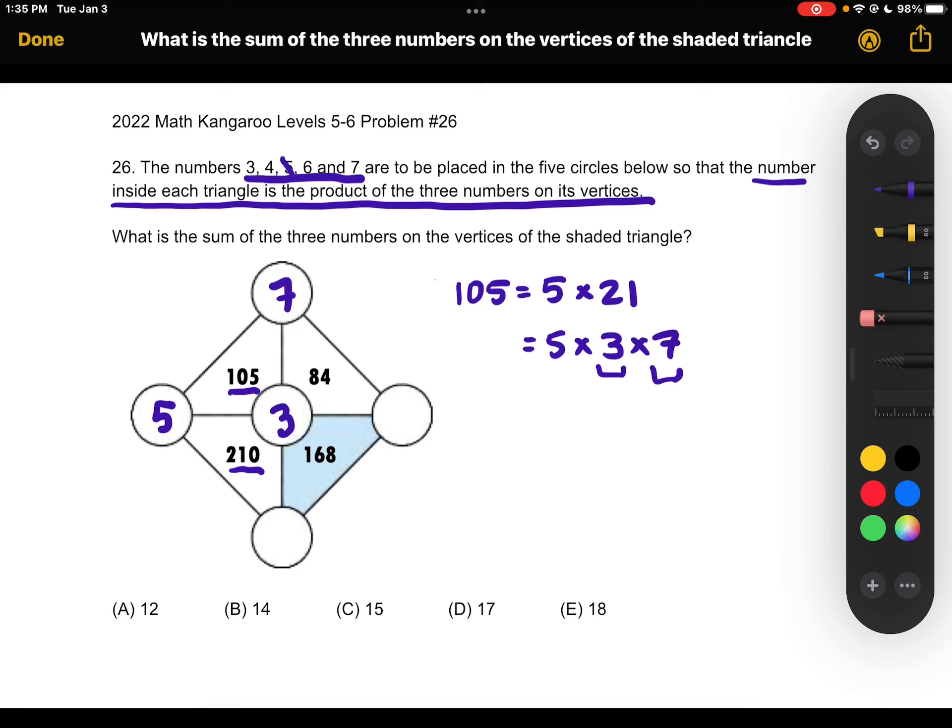That means that the placement of the 3 and 7 must be switched, with 7 in the middle and 3 at the top. And we can check this. So we know that 105 is 5 times 3 times 7, so it's a multiple of 7.